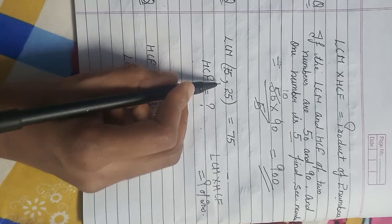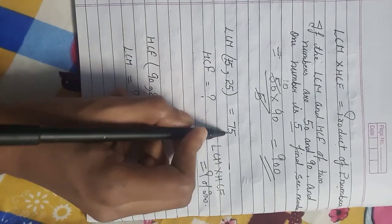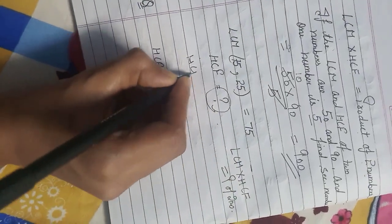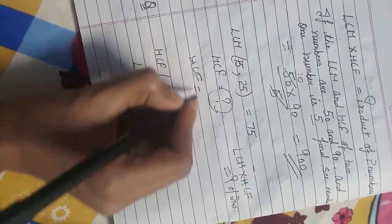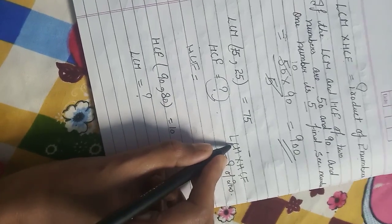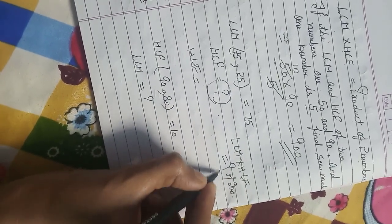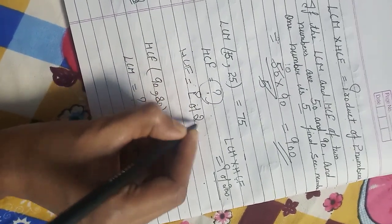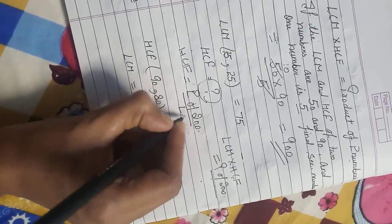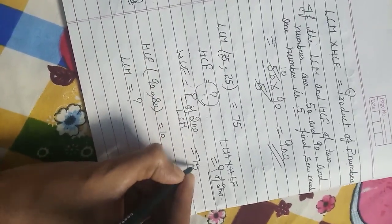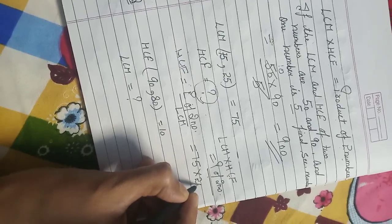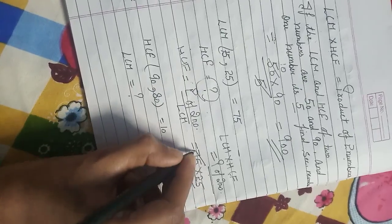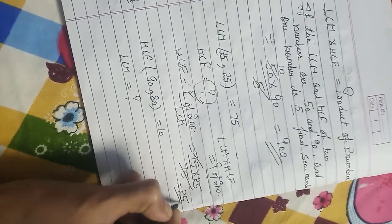But where you have two numbers and you need to find HCF, what do we do? Product of two numbers divided by LCM. So two numbers are 75 and 25, and LCM is 75. When we divide, the answer is 25.